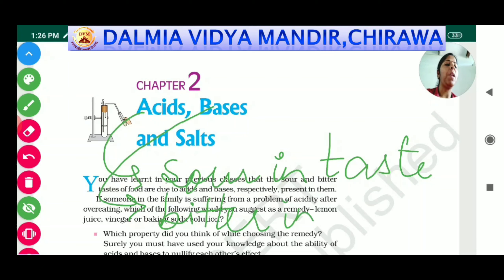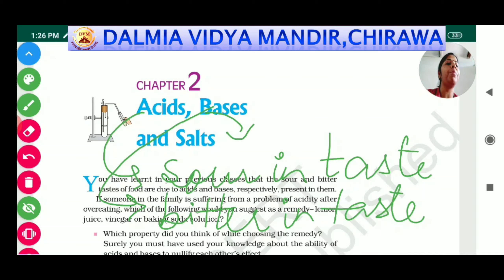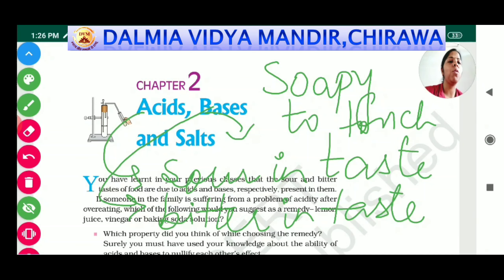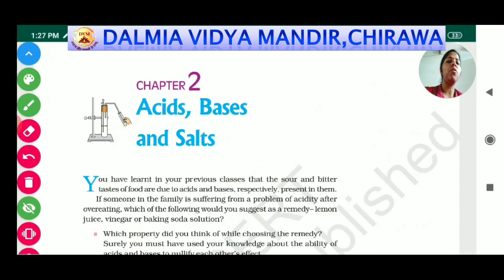Bases are soapy to touch — one very important property of bases is that they are soapy to touch, meaning you feel as if a soap is being rubbed on your hand when you touch a base. So bases are bitter in taste and soapy to touch, while acids are sour in taste.